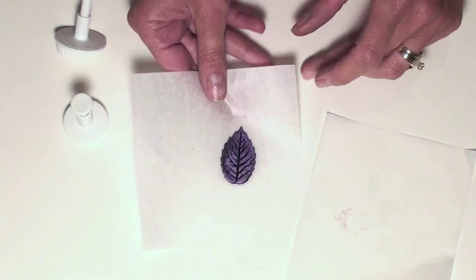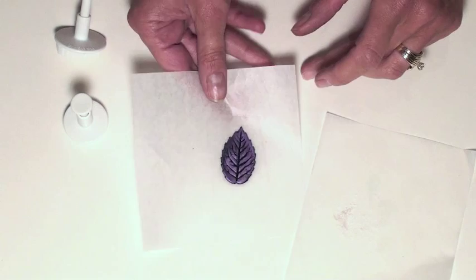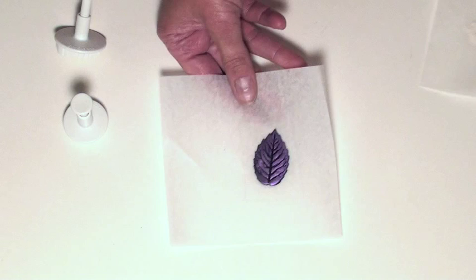A little bit more powder, burnishing it on, and we have a beautiful purple metallic leaf. We can even coat that with Magic Gloss after we bake it for a glass-like effect.